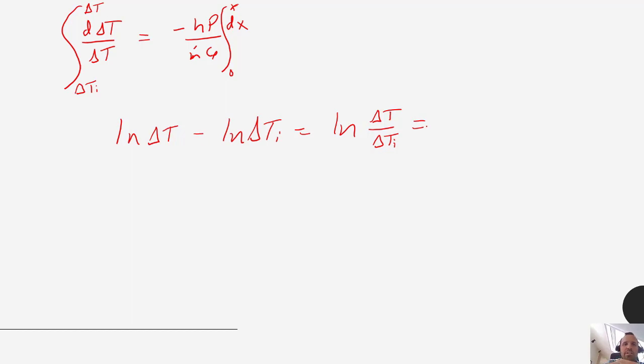So on the right side this integral is much simpler. So this is just minus h p x over m dot c p. So by taking e to each side we end up being able to rearrange this equation and we get it into the form of delta T over delta T_i is equal to e to the minus h p times x over m dot times c p.